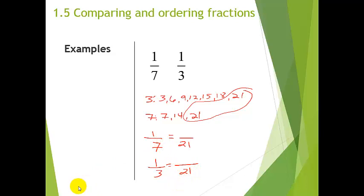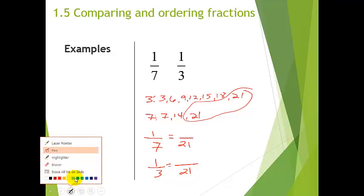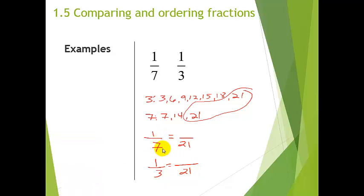So, one of the ways that I like to do this is, I like to ask myself, how do I get a 7 to turn into a 21? So, what do I multiply by to get to 21? Oh, 7 times 3. And, if I multiply the bottom of a fraction by 3, I have to multiply the top by 3.